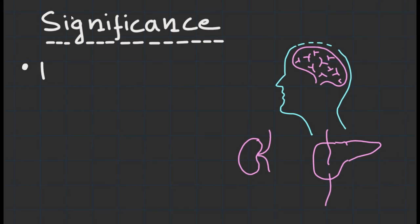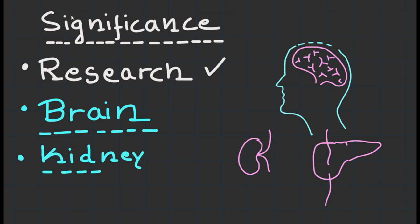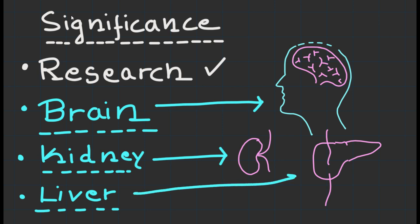Now let's explore the broader significance of ferroptosis. Although still an active area of research, ferroptosis has been implicated in various physiological and pathological processes. For instance, it has been linked to neurodegenerative diseases such as Parkinson's and Alzheimer's, as well as acute kidney injury and liver diseases.